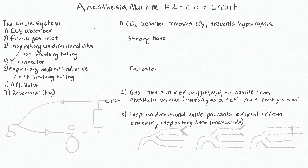There are essentially seven key components of the circle system. Starting with number one: the CO2 absorber. This is important because it removes CO2 from the circuit and prevents hypercapnia. The patient will exhale air that eventually goes back into the system, and if CO2 hasn't been removed effectively, they'll be re-breathing CO2. These CO2 absorbers have granules of chemicals that react with carbonic acid — CO2 combines with water in the absorber to make carbonic acid (H2CO3), effectively eliminating the CO2.